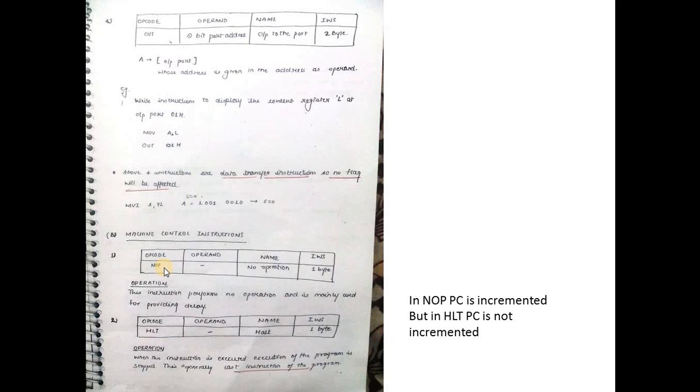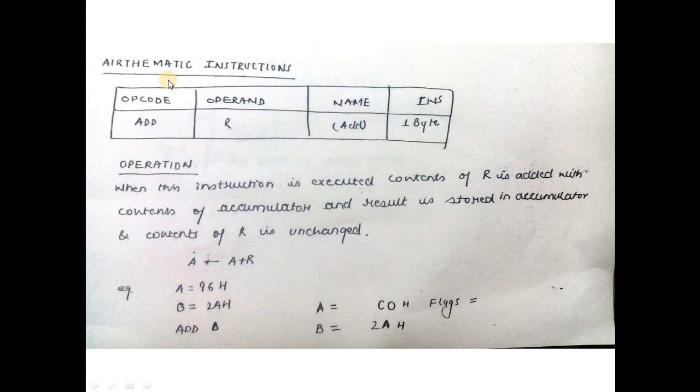Machine control instructions: NOP and HALT, very important for exams. NOP just provides a delay and does nothing. HALT is usually the last instruction of the program and stops execution. The main difference: in NOP, PC is incremented; in HALT, PC is not incremented.